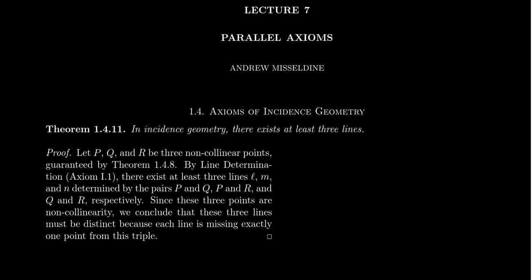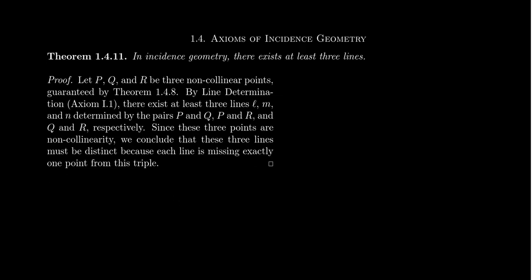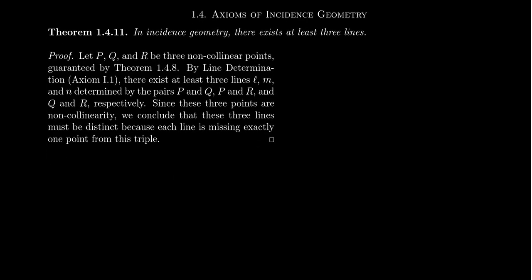You will recall in Lecture 6, we introduced the four axioms that David Hilbert gave for incidence between lines and points. We gave them the names Line Determination, which says that between any two points there exists a unique line, so two points determine a line. The second one was Secancy. Secancy says that every line has at least two points.